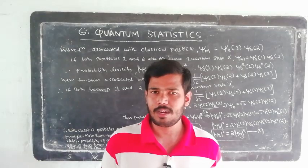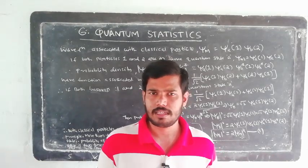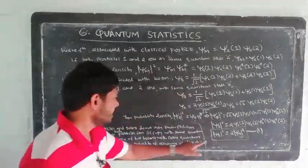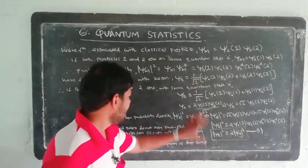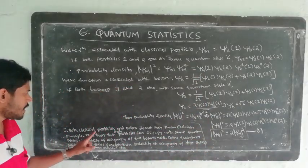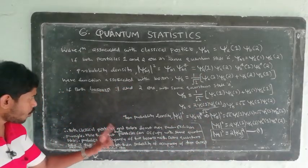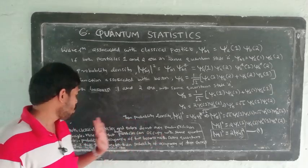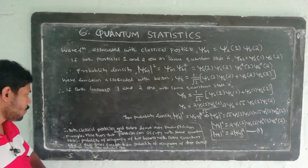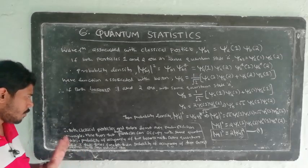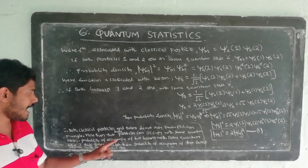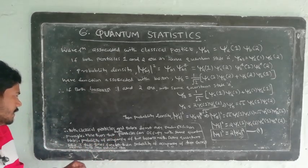The probability of two bosons occupying the same quantum state is two times greater than the probability of two classical particles occupying the same quantum state. Both bosons and classical particles do not obey the Pauli exclusion principle — more than one such particle can occupy the same quantum state.